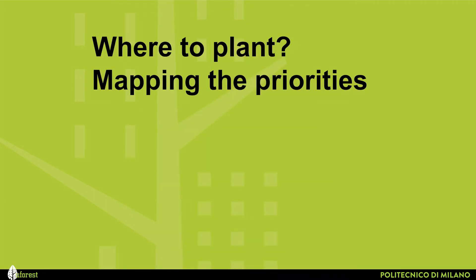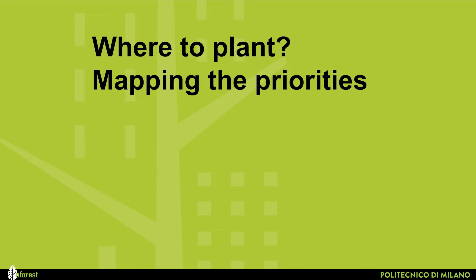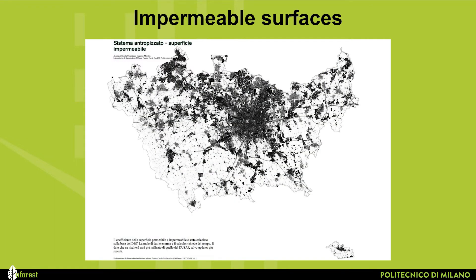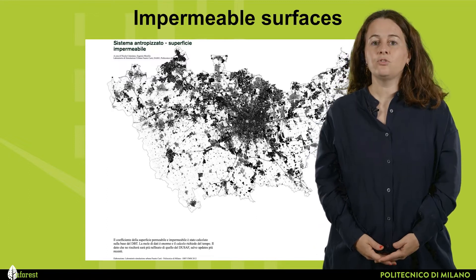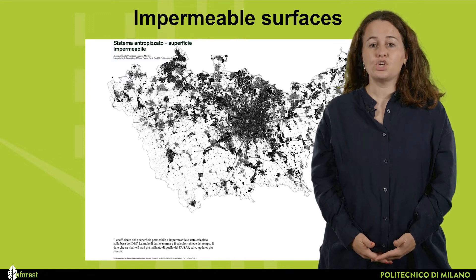I want to elaborate on these considerations. The first question when embarking on such a project is to understand our cities — so, where to plant is the first question in order to map the priorities. As FORESTAMI was mainly studied in an environmental context, the first element we studied is where the land is impermeable, to understand the balance between permeable and impermeable surfaces. Black areas are where the surface is already occupied and sealed — meaning that to plant trees in those areas you need to de-seal, to change the land use, to pass from grey to green surfaces.